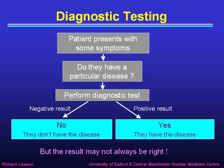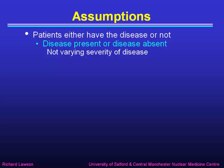Unfortunately, the result may not always be right — that's what we're trying to investigate with measuring diagnostic accuracy. So we have to make some assumptions. First of all, let's assume that patients either have the disease or they don't. The disease is either present or absent; there's no halfway house and no varying severity. It's either a clear-cut yes or no, which is obviously a little bit simpler than reality.